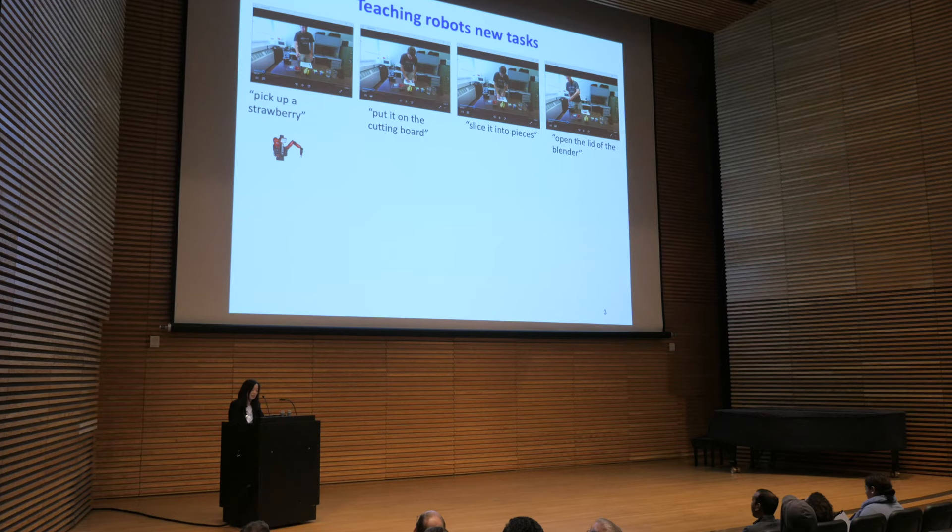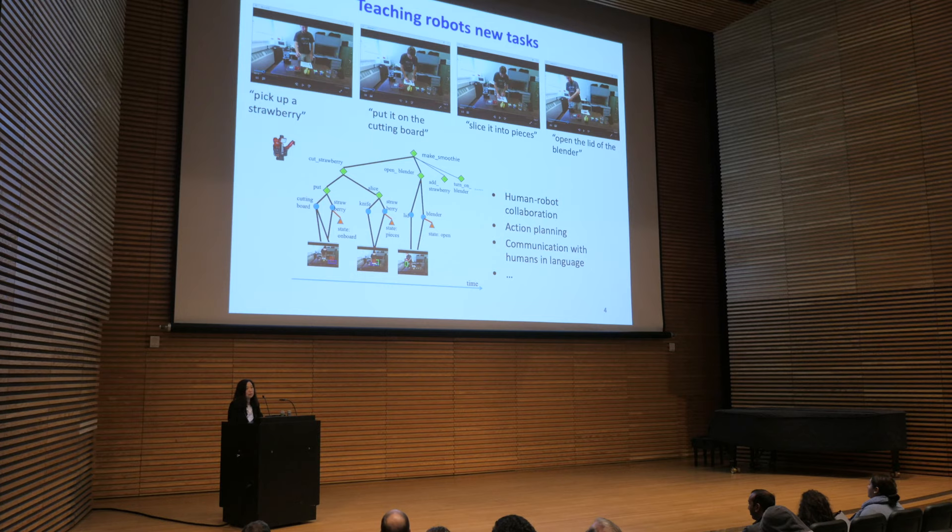Let's say you have a robot and you want to teach the robot how to make the kind of smoothie you like. You can teach robots through language instructions and also demonstrate to the robot how to perform the action: pick up the strawberry, put it on the cutting board, and slice it into pieces, so on and so forth. During this process, the robot can also ask questions. At the end of this interaction, we would like the robot to acquire this kind of grounded task structure.